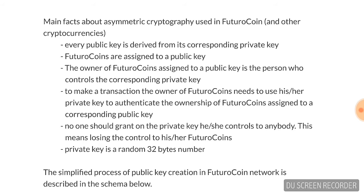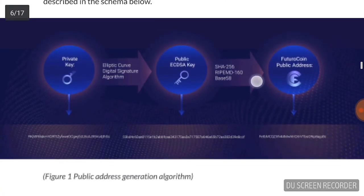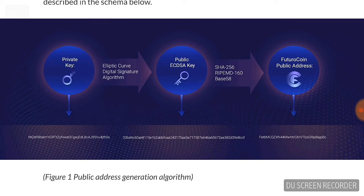A private key is a random 32-byte number. Looking at the diagram of FutureCoin: first is the private key, second is the public ECDSA key, and third is the FutureCoin public address. We can take the first as the sender and the last as the receiver, with a transaction value coded in between. The outcome is a final FutureCoin address formed after verifying via private key plus public key, combined together using SHA-256 algorithm to form the FutureCoin public address.